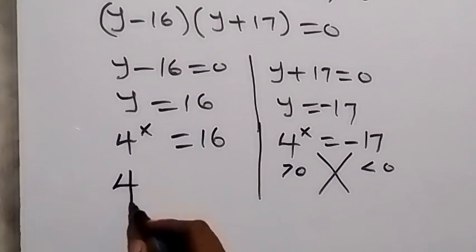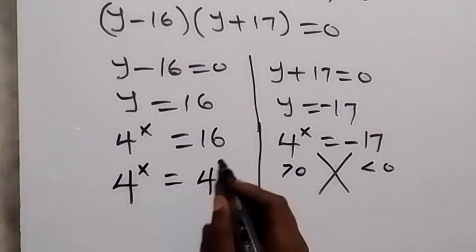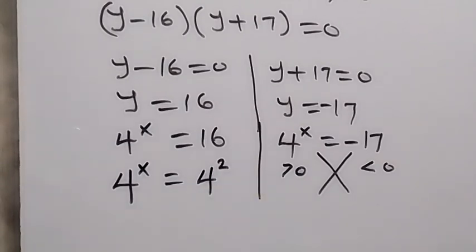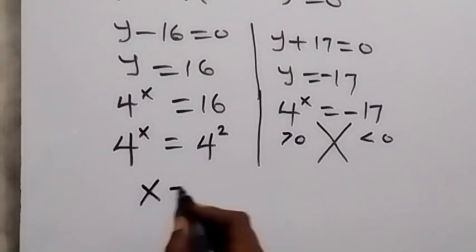Then on this side we can solve this by changing 16 as well to base 4. And we have 4 to power x equals 4 square. 4 square is 16, 4 times 4. And here the base are equal, we can say that x equals 2.